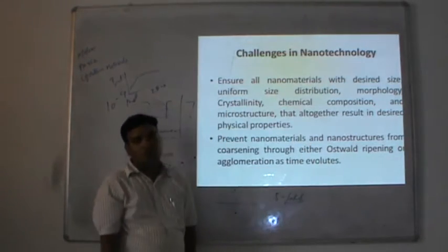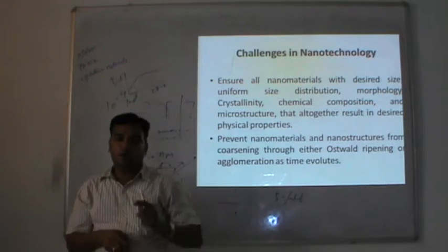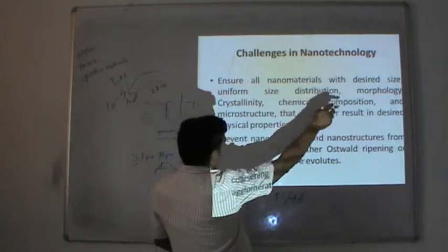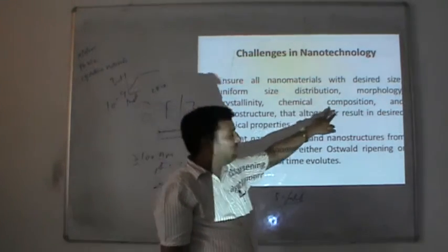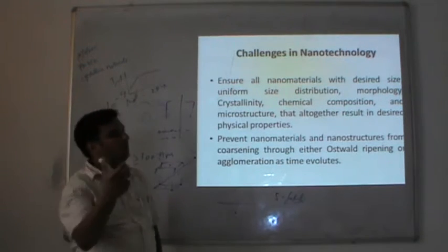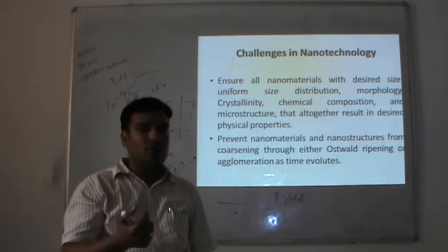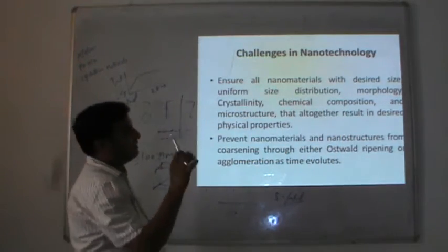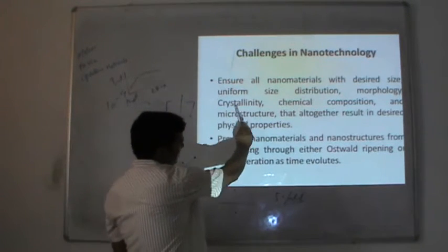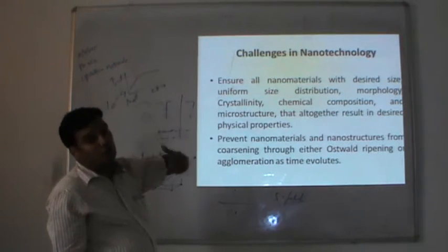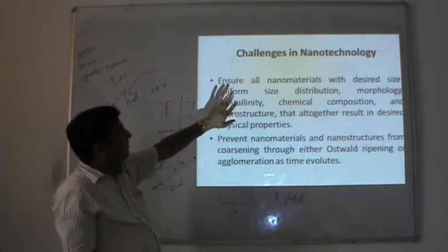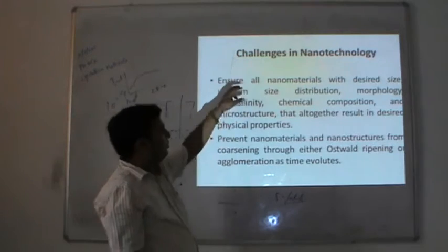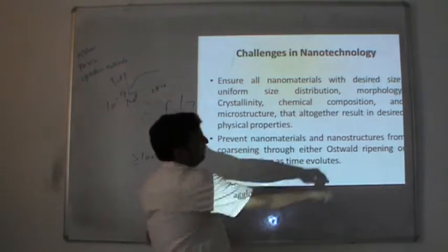The second major challenge is uniform size distribution. Suppose I have particles over an area of 10 cm² — are all the atoms present the same size or not? What about their morphology, chemical composition, and microstructure? In nanostructures, it is very difficult to find out the exact chemical composition. So I am not sure that the prepared nanomaterial has the same chemical composition as intended. All these together determine the physical properties — these are the biggest challenges, especially design size and uniform size distribution.